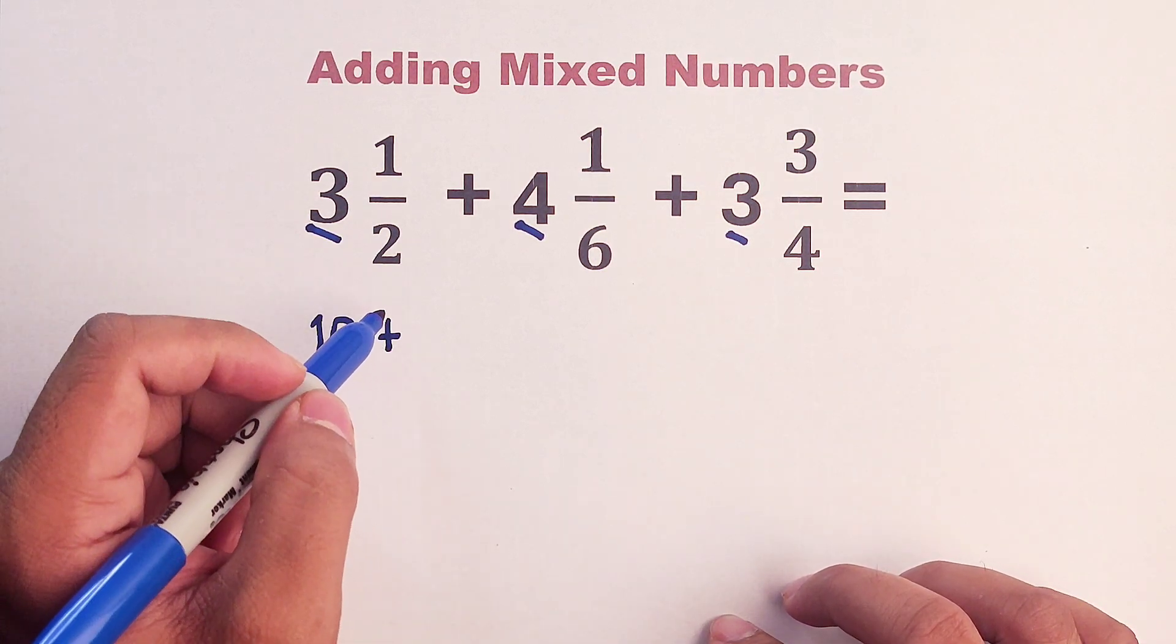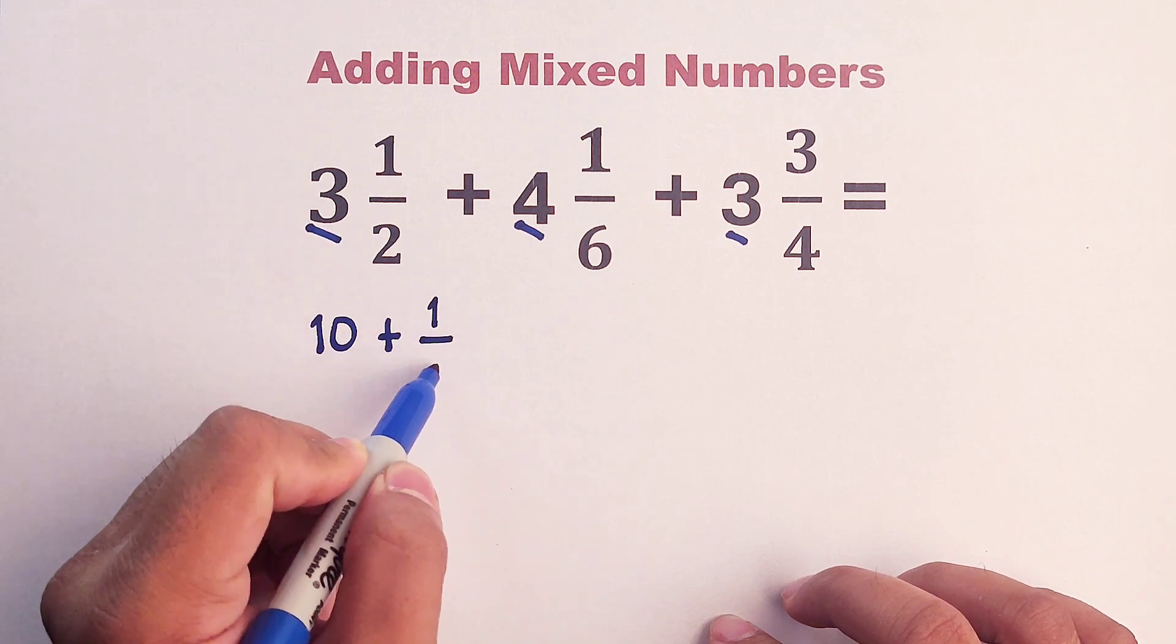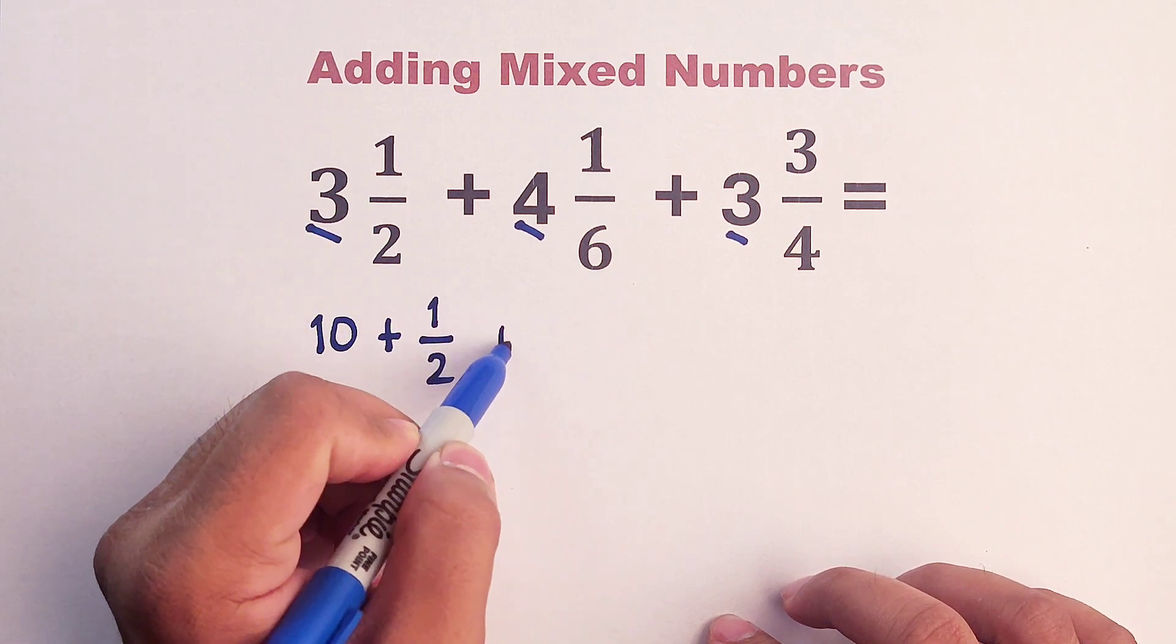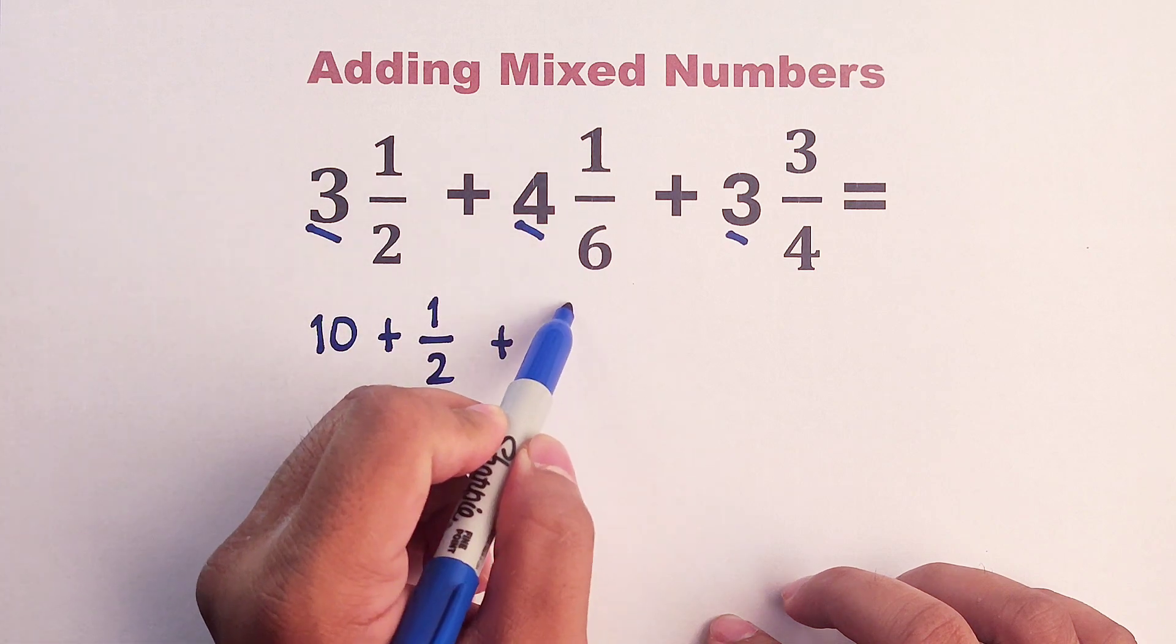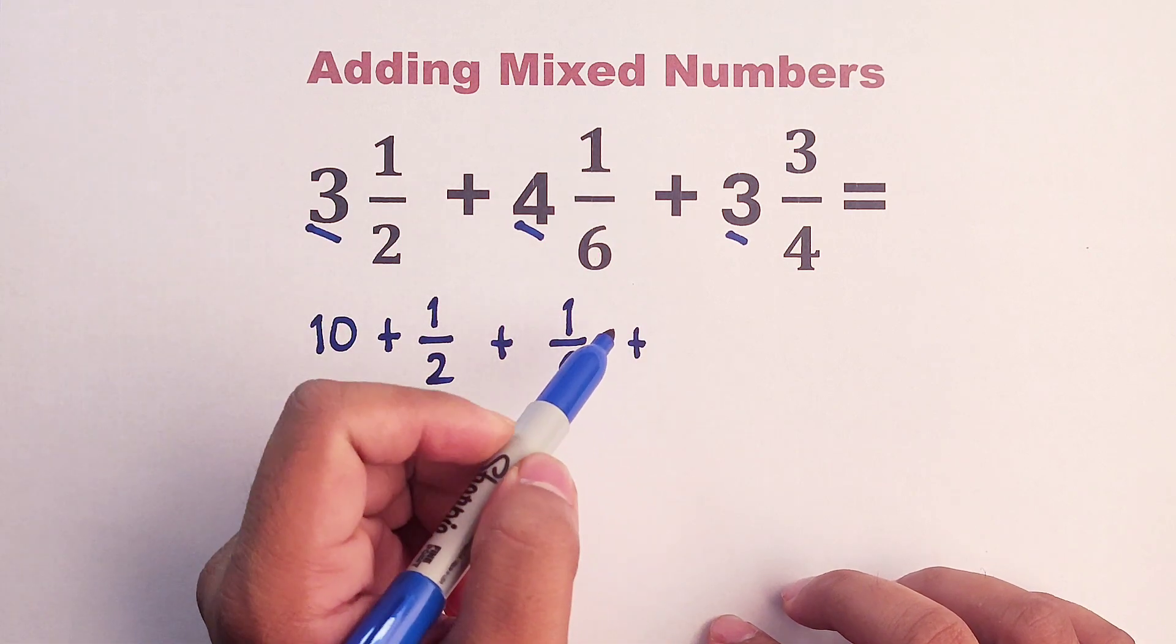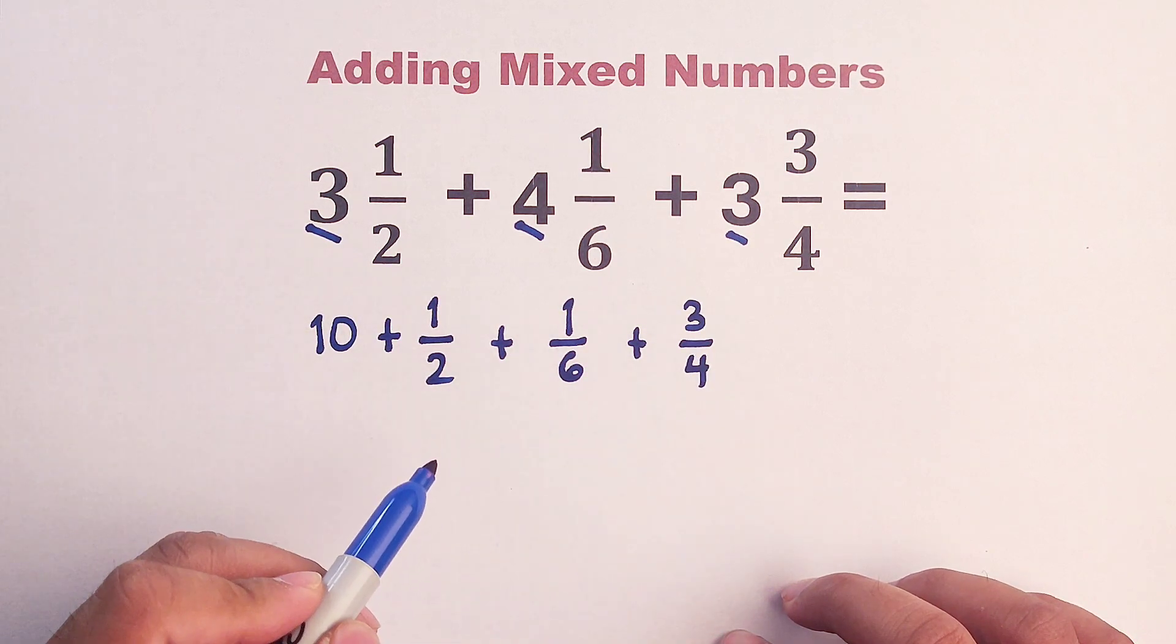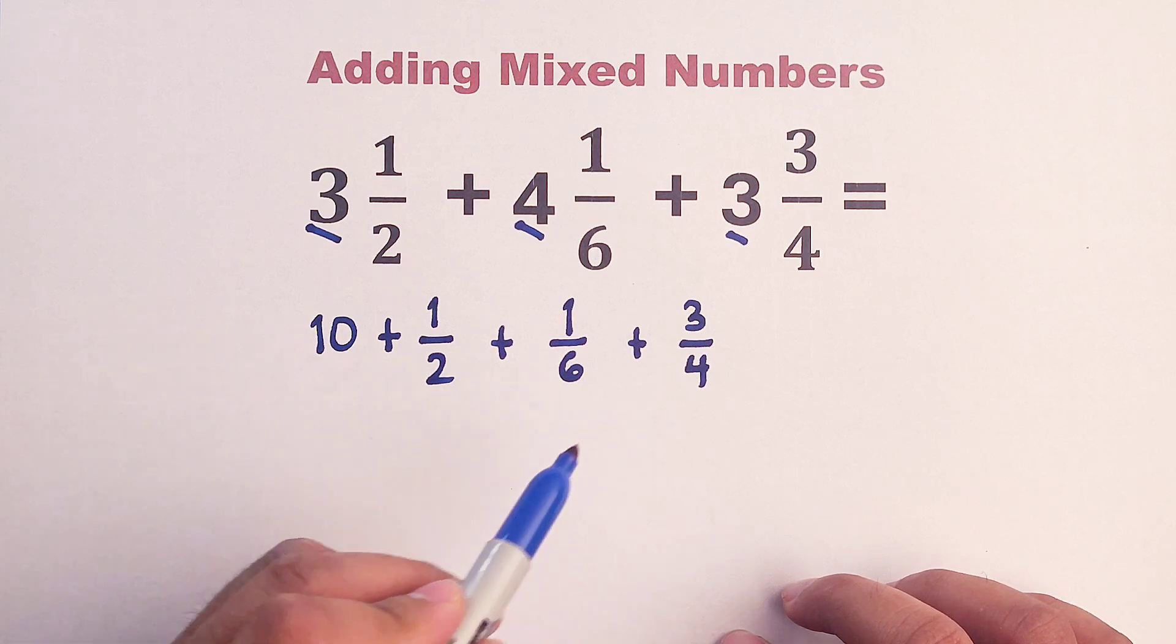Then plus, we will add the fractions. We have one-half plus one over six plus three over four. And this time, to add these fractions, we need to create denominators that are the same.